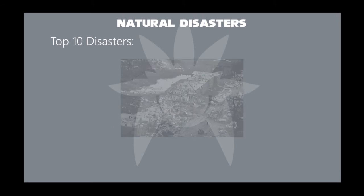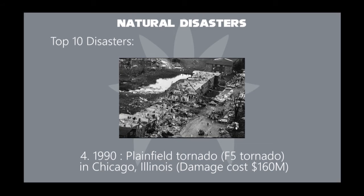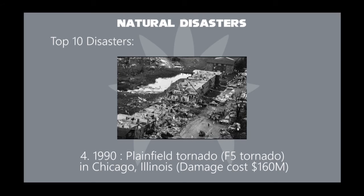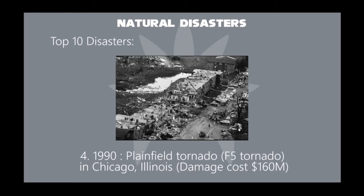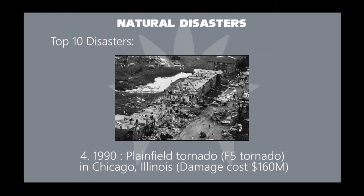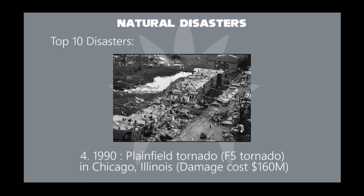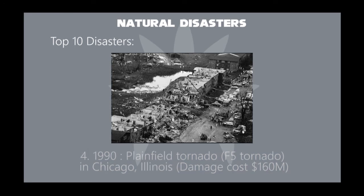In 1990, the Plainfield tornado was a devastating tornado that occurred on the afternoon of Tuesday, August 28 in Illinois. The violent tornado killed 29 people and injured 353. This is probably the F-5 tornado ever recorded in August and the only F-5 tornado to strike the Chicago area. Its damage cost took $160 million.